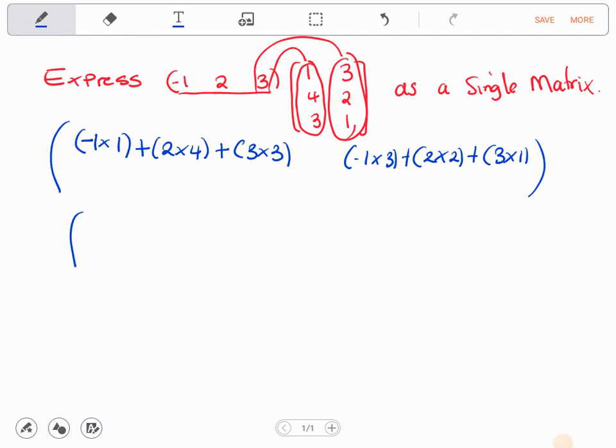So we continue. Negative 1 times 1 is just negative 1. Plus 8. Plus 9. We leave this space. We're going to have negative 3. Plus 4. Plus 3. And what do we get?